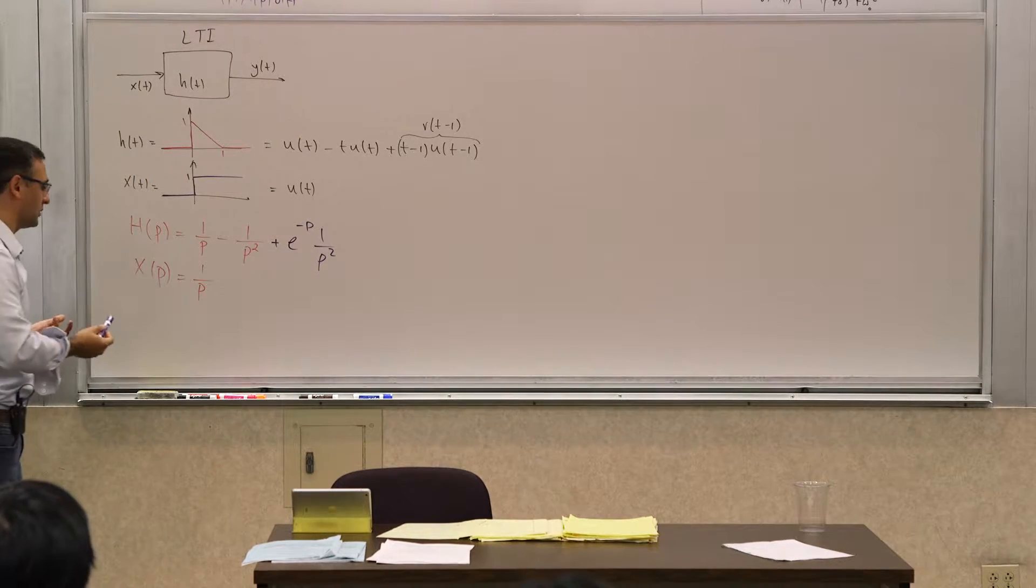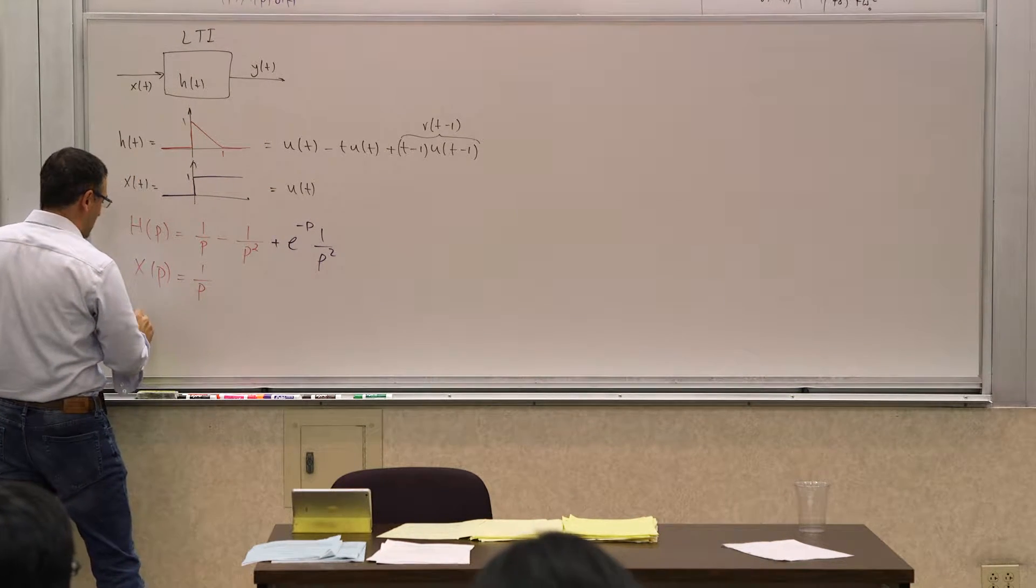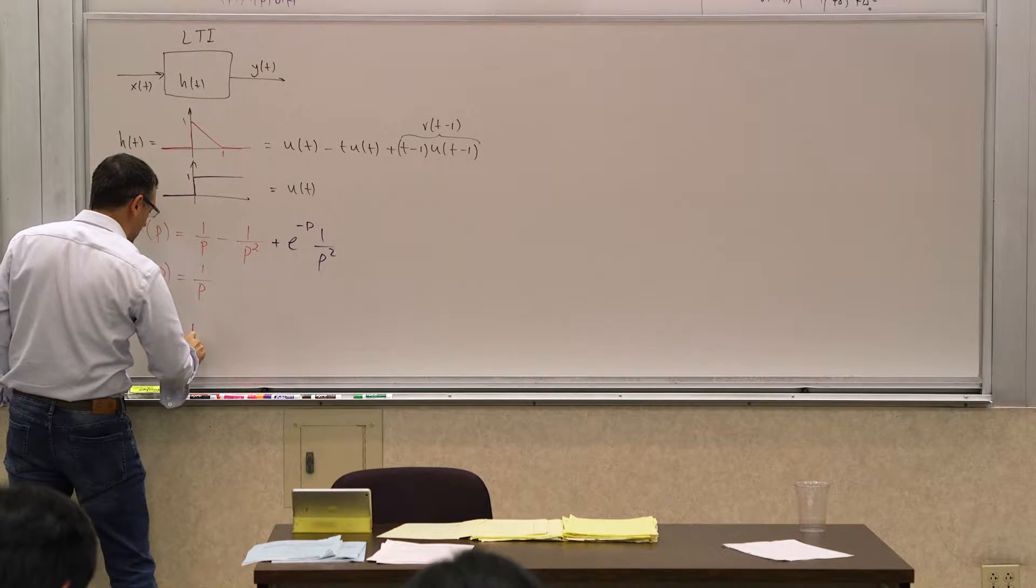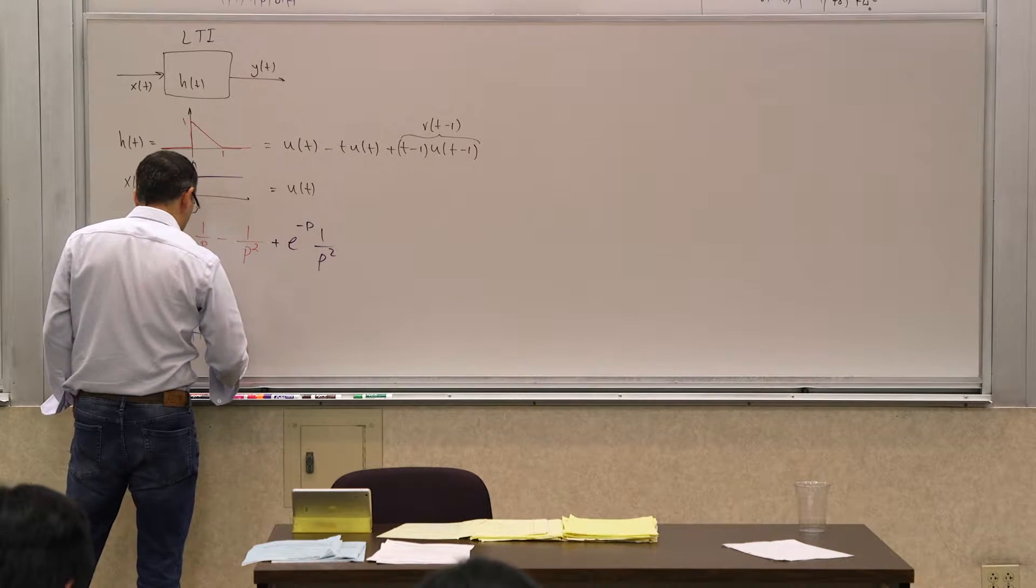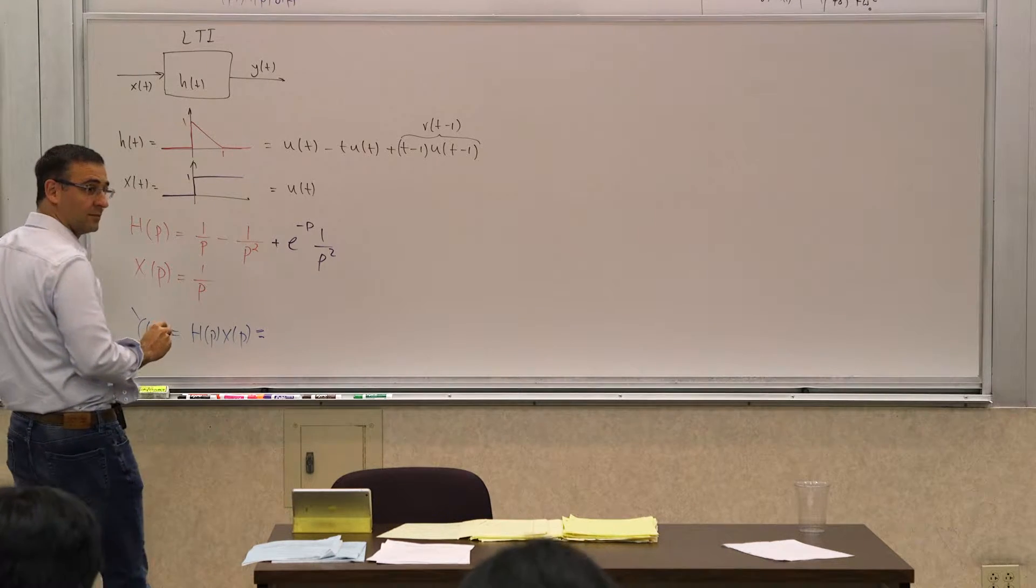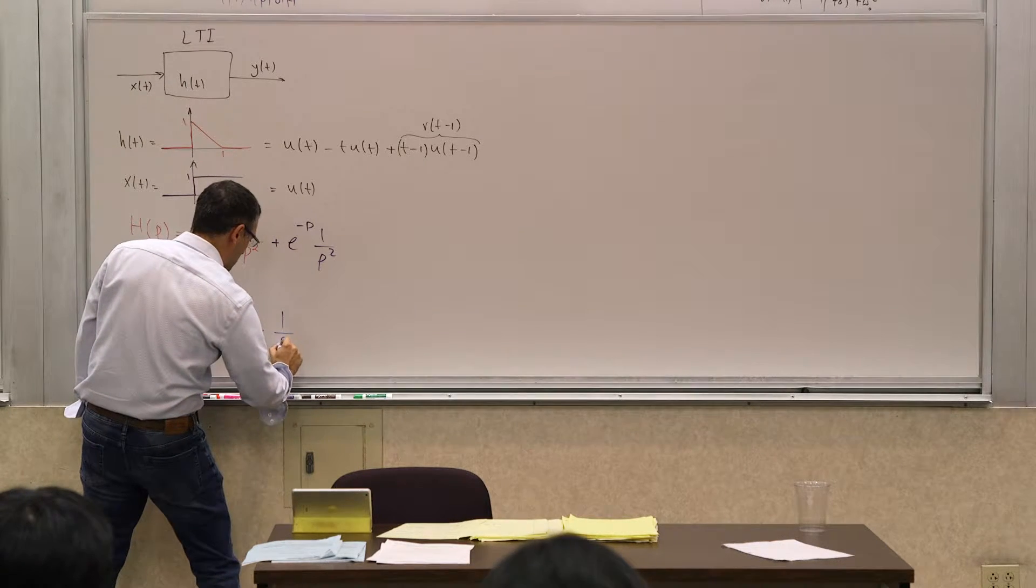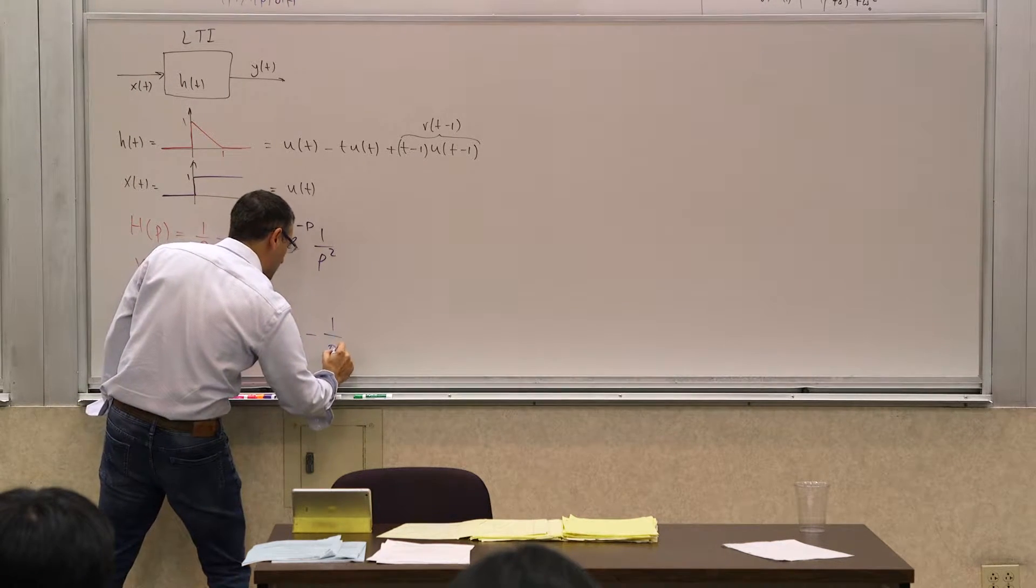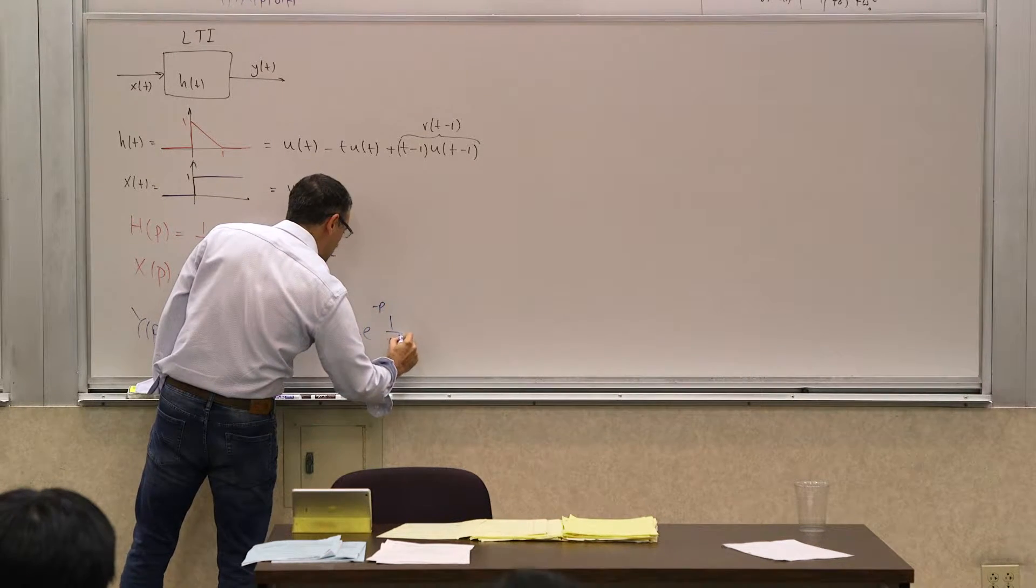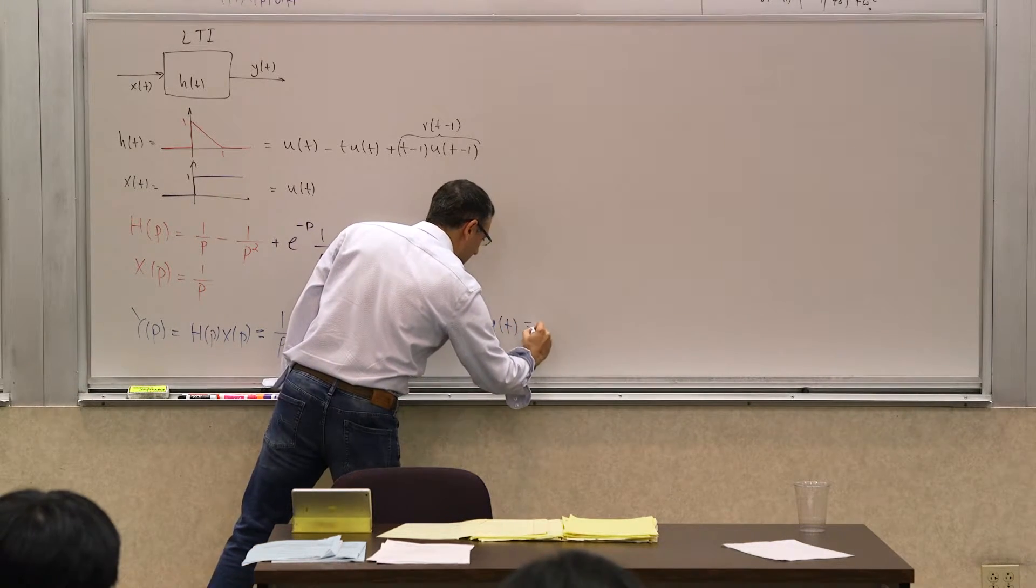So how do I calculate the output? That's the objective. So we did develop that, so if I wanted to find the output for this, it's going to be obviously the product, we argued that it's the product. Which is what? What's the product of these two? 1 over p squared minus 1 over p cubed plus e to the negative p, 1 over p cubed.